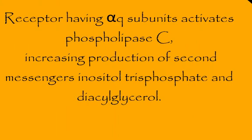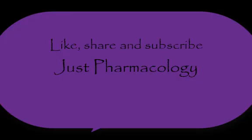Receptors having alpha-Q subunits activate phospholipase C, increasing production of second messengers inositol triphosphate and diacylglycerol.